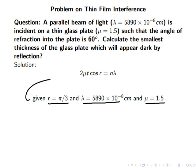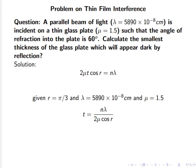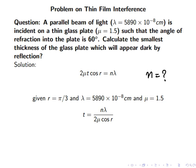If we substitute these known parameters, then we can solve for t. But here there is another unknown parameter which is n. If we rearrange the equation, t = nλ / (2μ cos r).